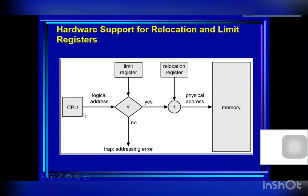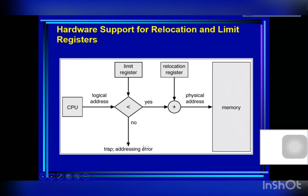When a process executes on the CPU, it generates a logical address to access main memory. The hardware first compares the logical address with the limit register. If it is less than the limit, the relocation register value is added to obtain the physical address, and the address is valid. Otherwise, the address is invalid, and the hardware traps to the operating system, which terminates the process with an addressing error.